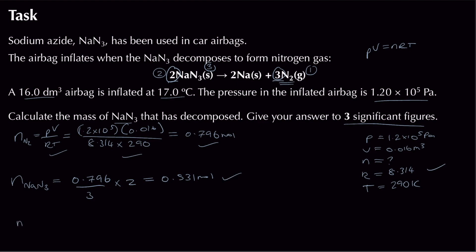The final mark comes from calculating the mass of sodium azide. The molar mass of NaN₃ is 65 g mol⁻¹. Mass = n × Mr = 0.531 × 65 = 34.5 grams to three significant figures. That's a six-mark question done neatly, showing how to get the maximum marks on these questions.